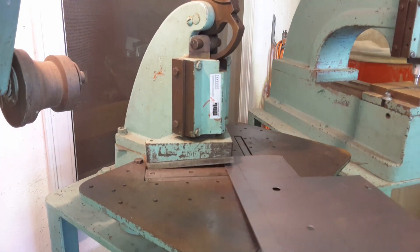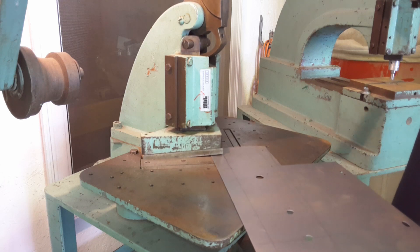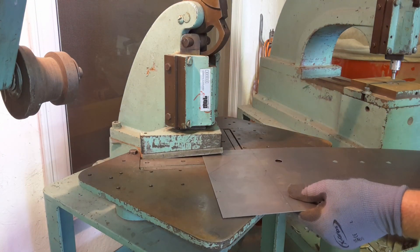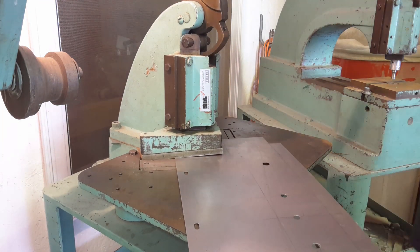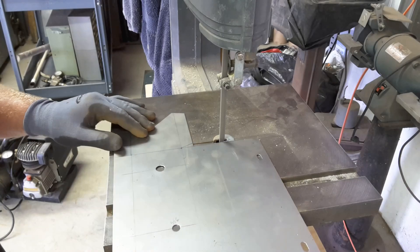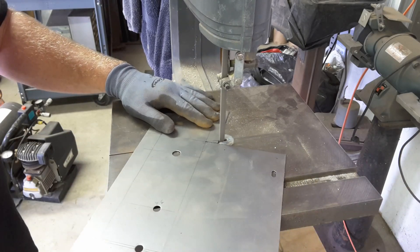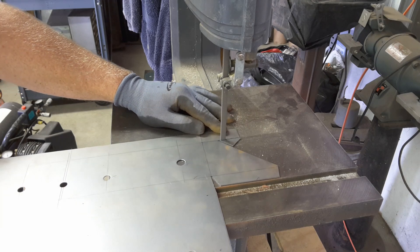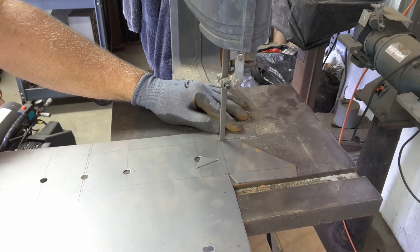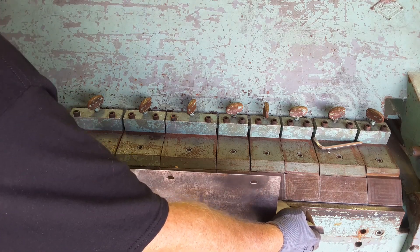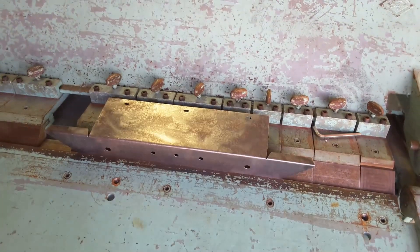Next I moved over to the corner notcher where I was able to take out the bulk of the material that remained before I could do any of the bending. The slots and areas I couldn't get with the corner notcher I took out at the bandsaw.